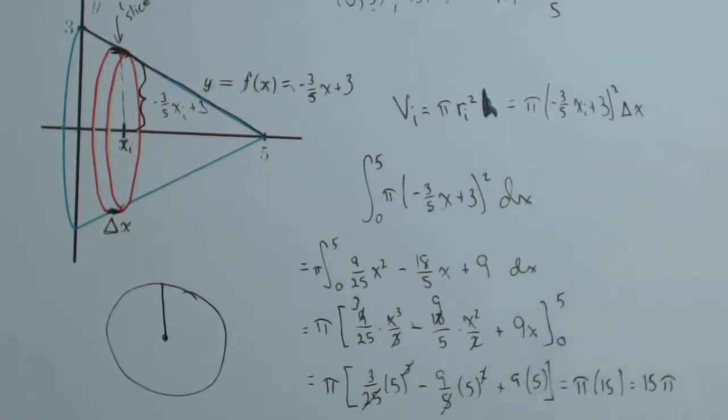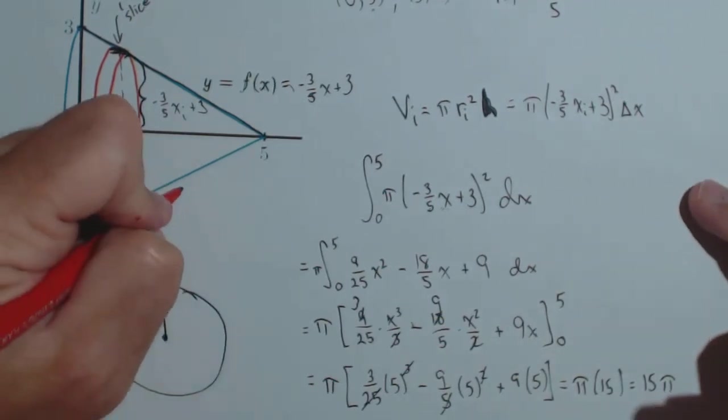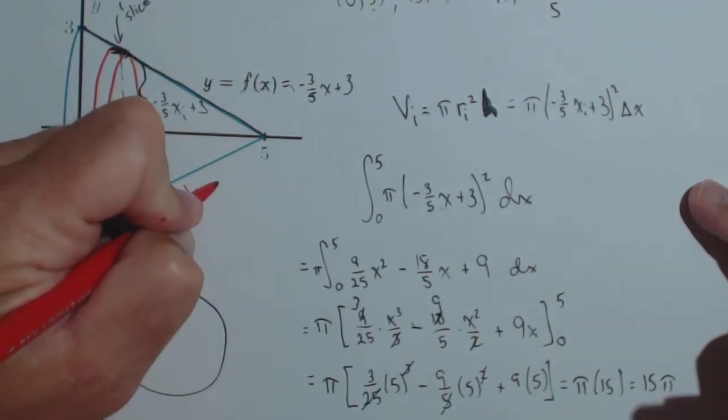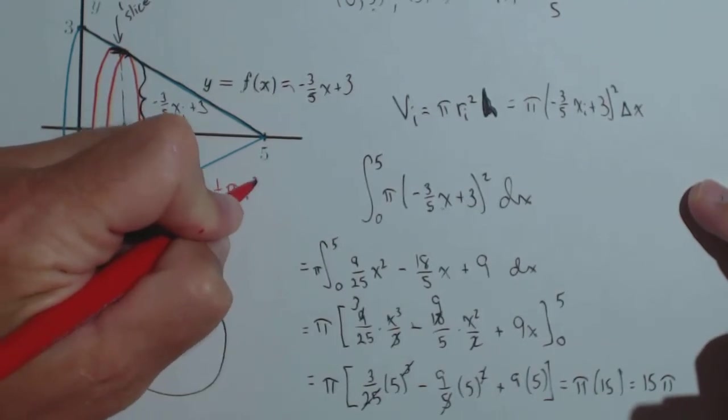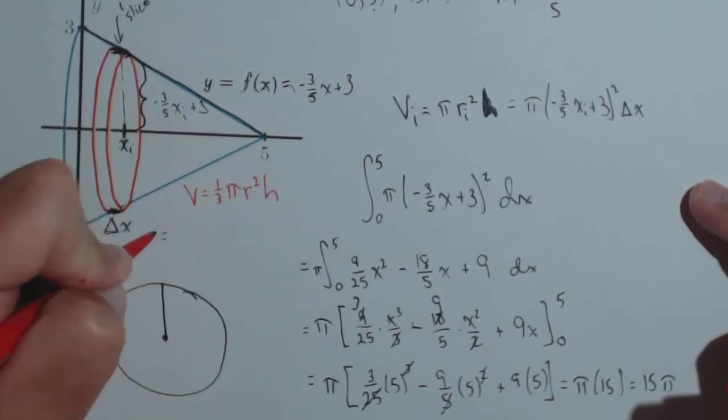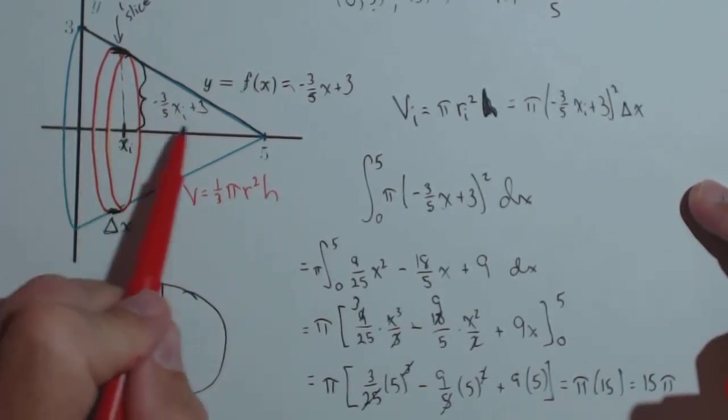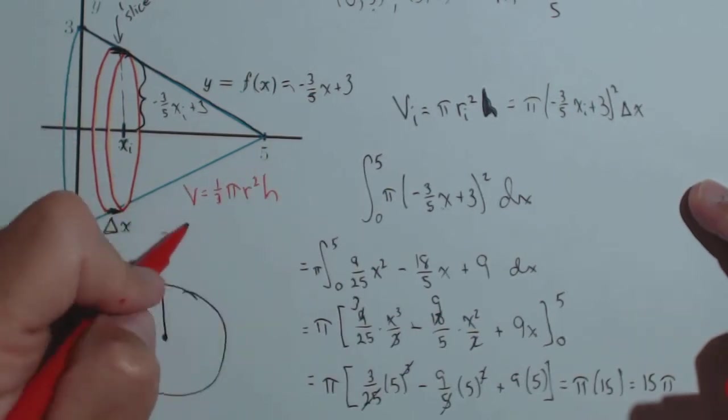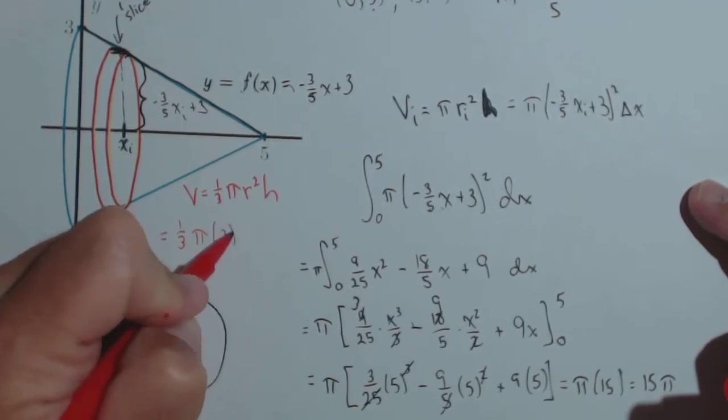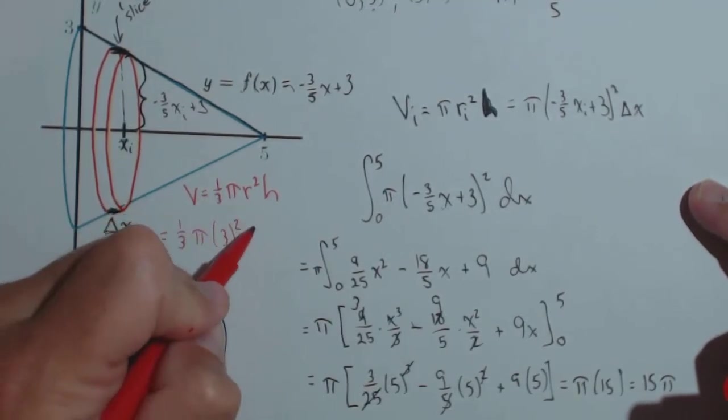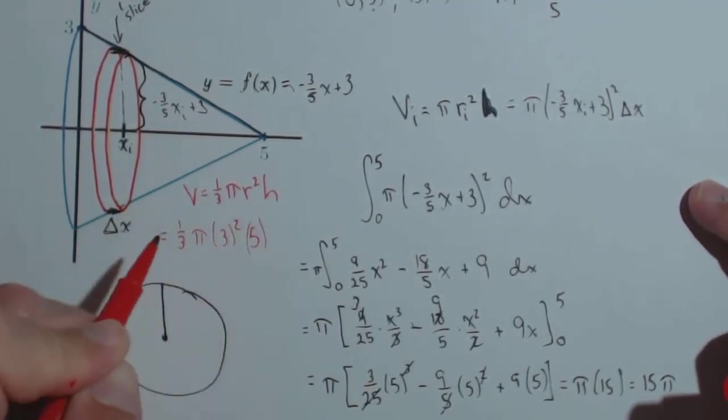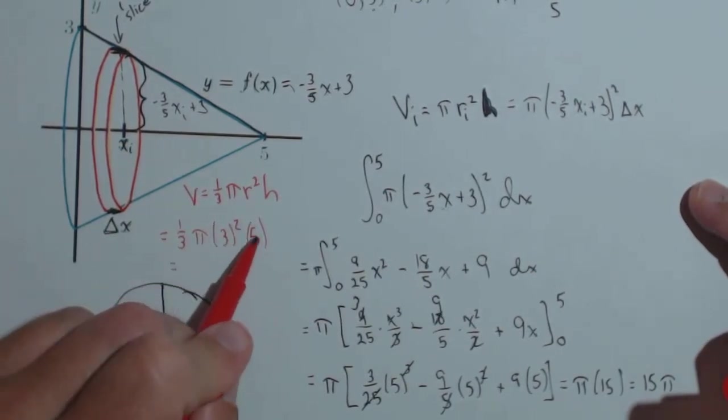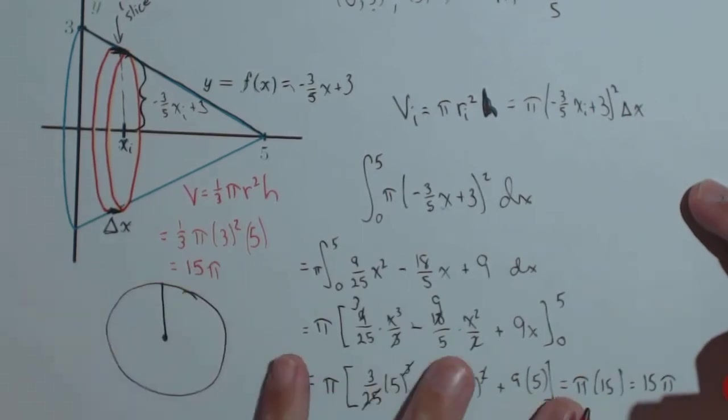What's nice about this one is we can do a really quick check. We know that the volume of a cone is 1/3 π r² h. So notice we have a cone here with a height of five and a radius of three. So we have 1/3 π times 3² times 5. 3² is 9, times 5 is 45, a third of that is 15π. So we see that we get the exact same value.